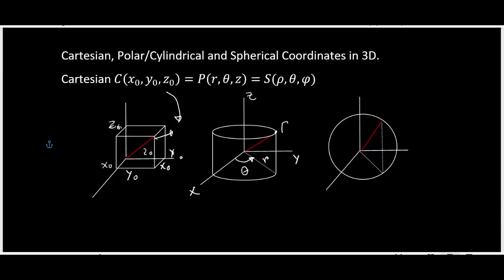In spherical coordinates, we again have y-axis, x-axis, and z-axis. The point is located here; the angle in the xy-plane is still theta, this length here is rho, and the angle from the z-axis down to the point is phi.